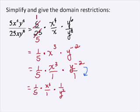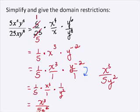That will give us 1 fifth times x to the third over 1 times 1 over y squared. If I finish multiplying my numerators, 1 times x to the third times 1 is x to the third. On the bottom, 5 times 1 times y squared is 5y squared. So my final answer in simplified form is x to the third over 5y squared.